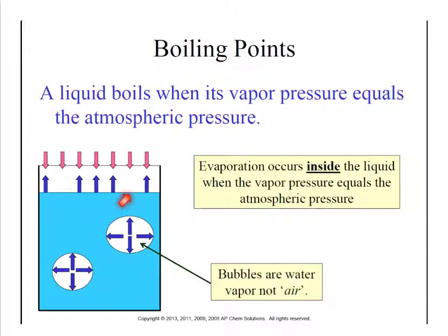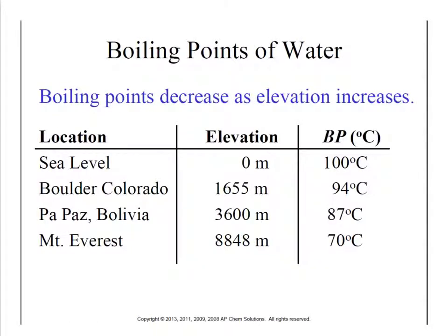This is also why water boils at lower temperatures at higher elevations. If you go up into the mountains, you have less air stacked on top of you, so atmospheric pressure drops. If the atmospheric pressure is lower, it requires less energy or less vapor pressure to overcome it. So if atmospheric pressure drops to 10 pounds per square inch, you only need 10 pounds per square inch of vapor pressure. At sea level, water boils at 100 degrees Celsius. In Boulder, Colorado — the mile-high city — water boils at 94 degrees Celsius. On Mount Everest, 70 degrees Celsius, so things just tend to take a lot longer to cook.